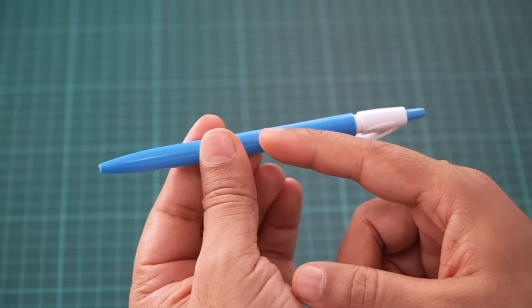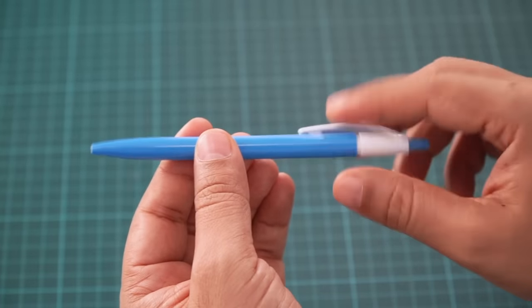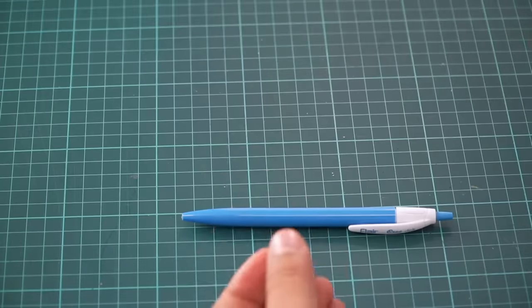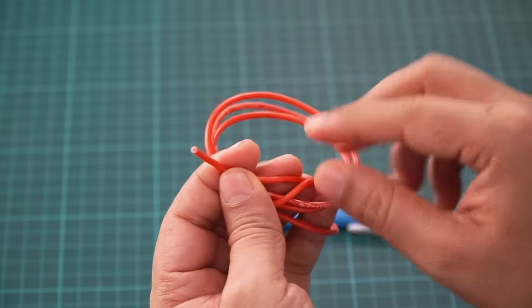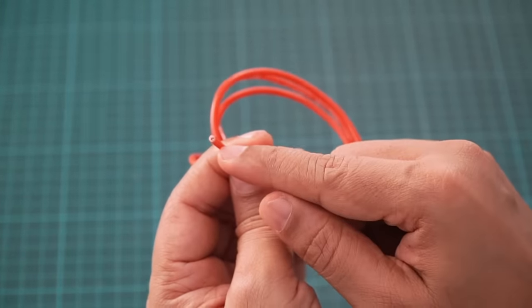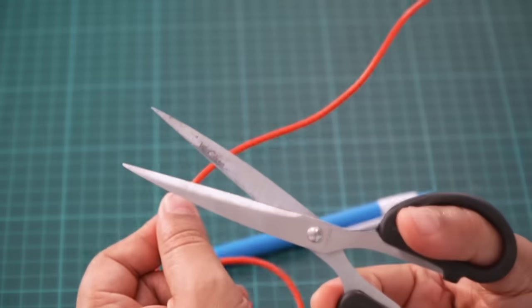So now we have just this plastic body. Now plastic is not a good conductor for electricity. So we have to figure out how to transfer the charge. For that, I am going to use some electrical wire. This is your regular electrical wire, which has a copper wire inside. So I'm going to take a small piece from this wire. To cut it, I'm using regular scissors.